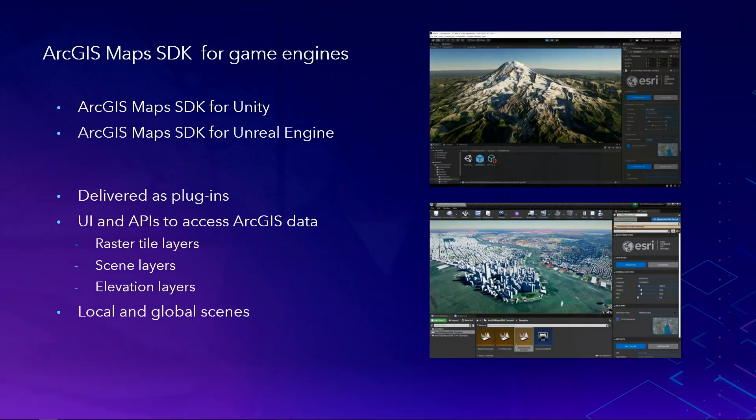We are delivering the ArcGIS Maps SDK as a developer product that integrates with the two market-leading game engines, Unity and Epic's Unreal Engine. The ArcGIS Maps SDK for Unity and the ArcGIS Maps SDK for Unreal Engine are currently available in beta. They're distributed as plugins and they provide components and APIs to access ArcGIS services and local data.